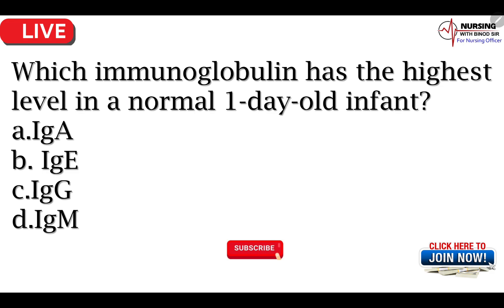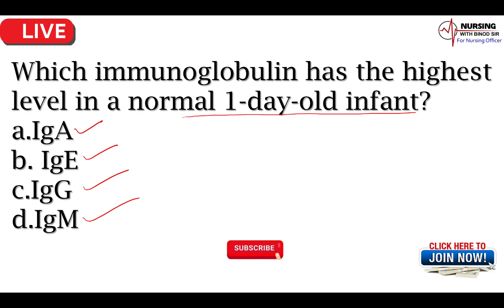Now we can proceed to the next question। Which immunoglobulin has the highest level in a normal one day old infant? One day old infant में कौनसा immunoglobulin सबसे ज़्यादा देखने को मिलेगा? A — IgA, B — IgE, C — IgG, D — IgM। Answer होगा immunoglobulin G। Got it?